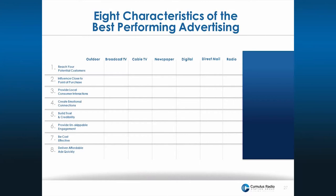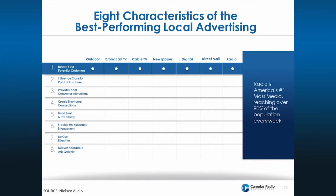The eight characteristics are: number one, reaching your potential customers — and in this study, reach also proved to be the most important. Influencing customers closest to the point of purchase, meaning being able to reach them right before they might make a buying decision. Radio reaches more people every week than any other medium, reaching nine out of ten adults consistently week in and week out.